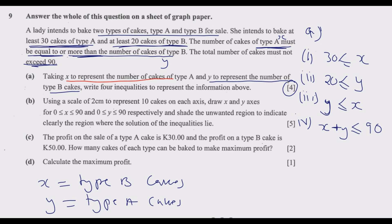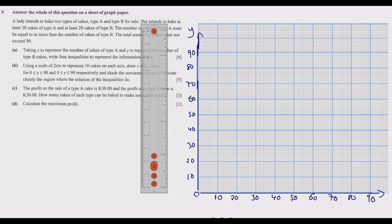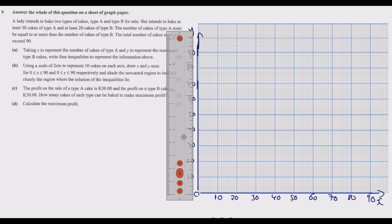Moving to Question B: using a scale of two centimetres to represent 10 cakes on each axis, draw the X and Y axes and shade the unwanted region. On a standard graph paper, one square box equals two centimetres, representing 10 units (10 cakes). Once you understand that, you construct your graph. Label your axes correctly — both axes go up to 90.